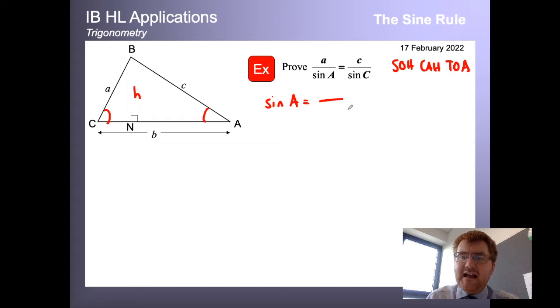So let's work out sine A first of all. Remember sine A is equal to opposite, so in this case it's going to be H divided by hypotenuse, which is going to be equal to C.